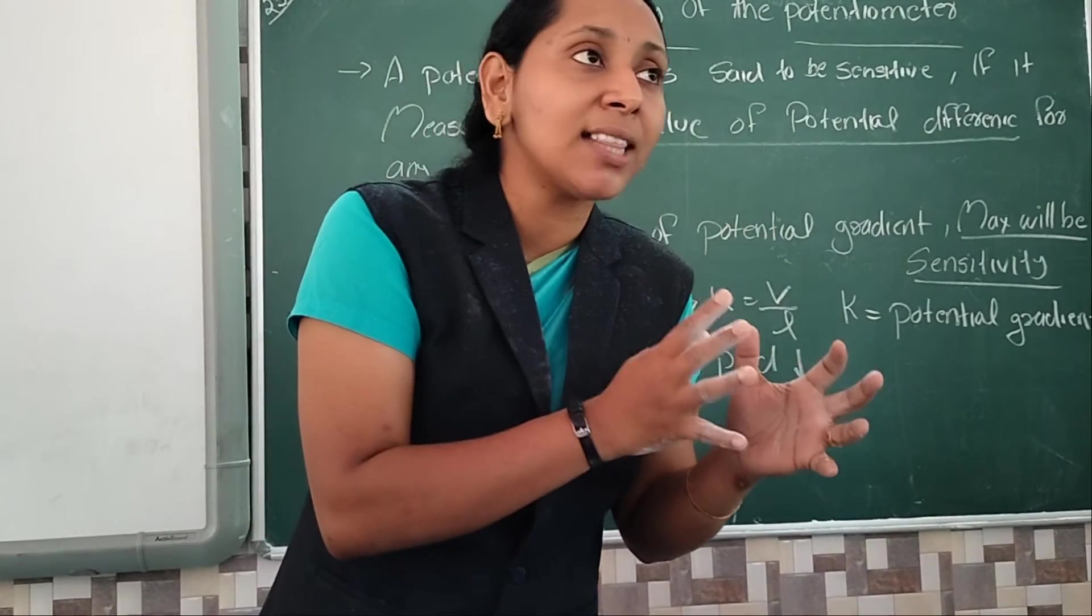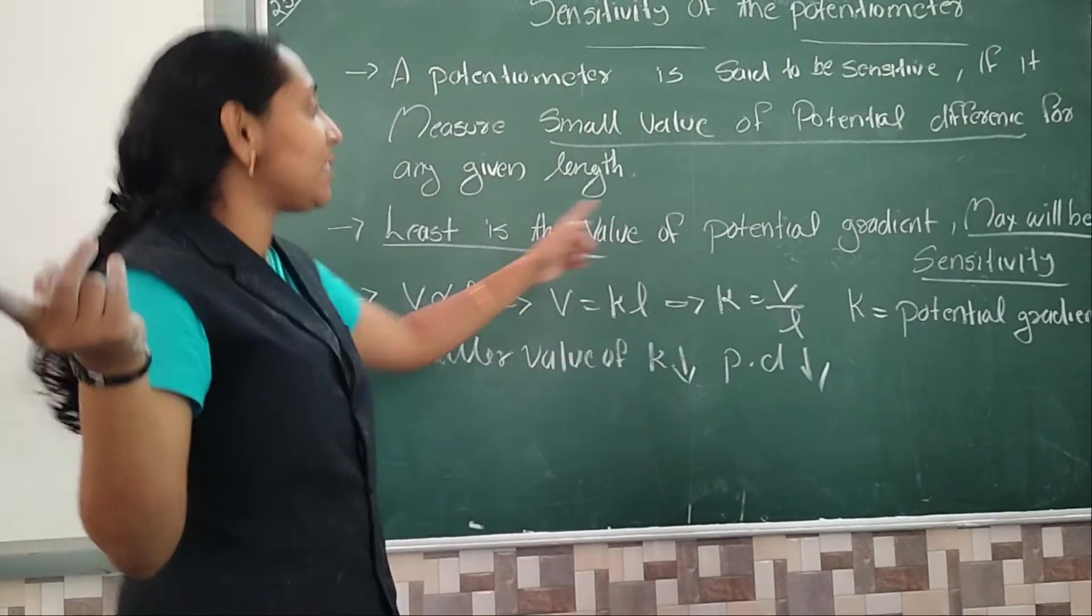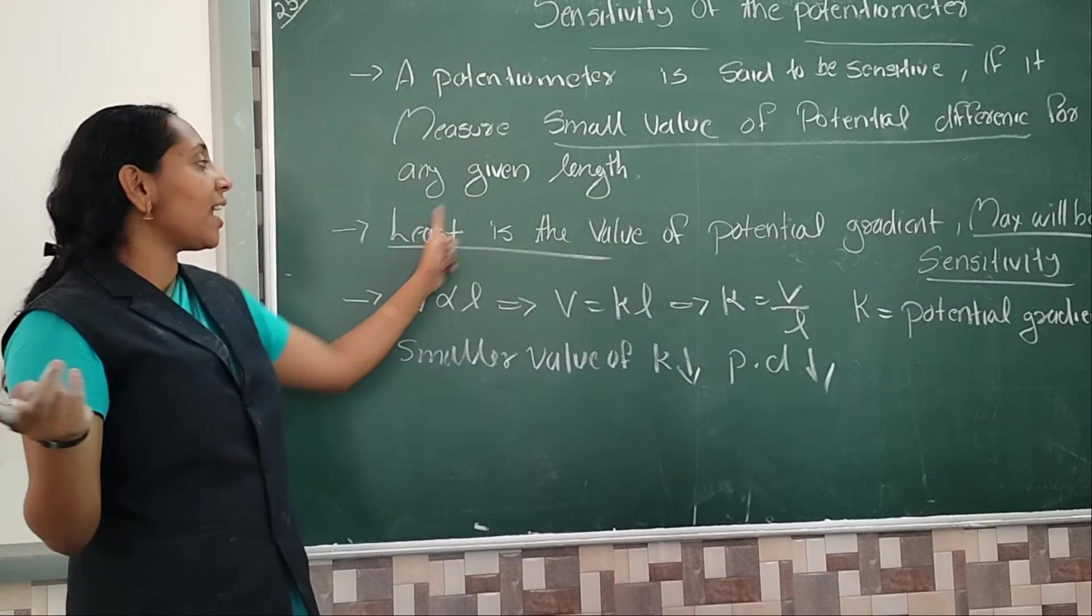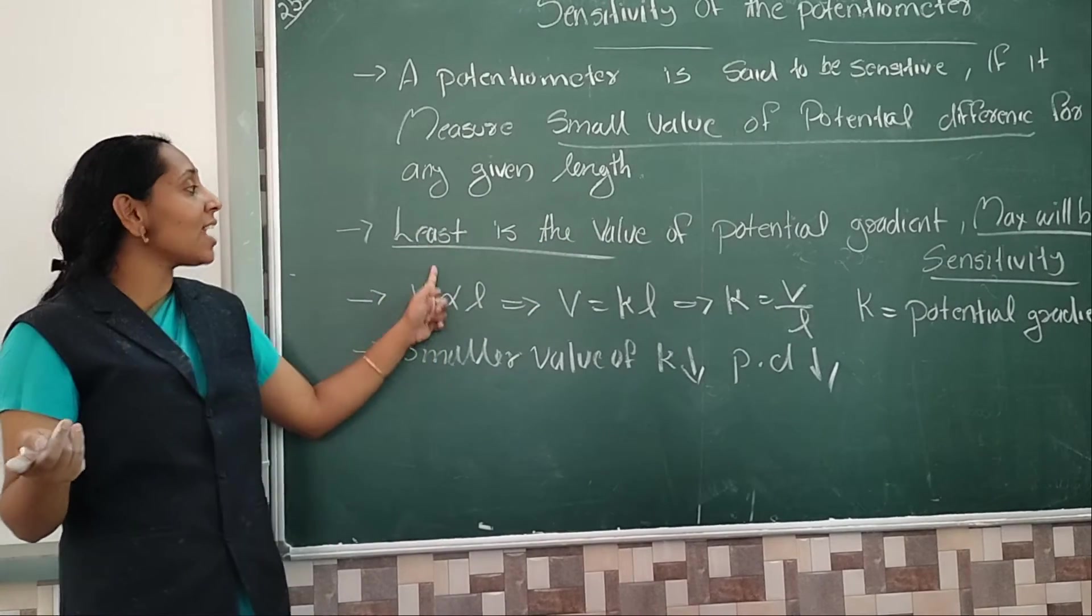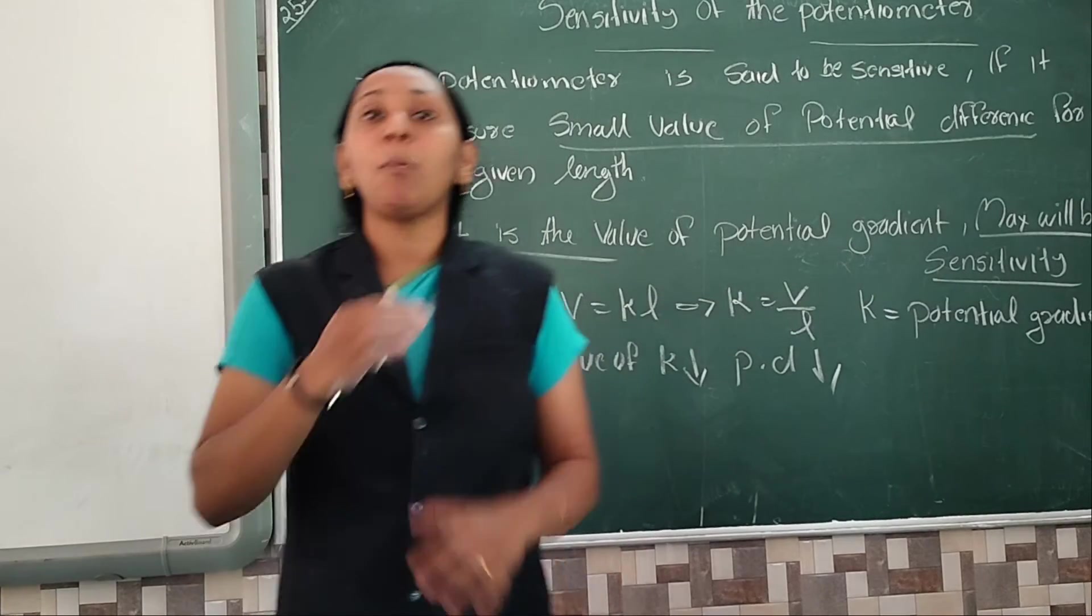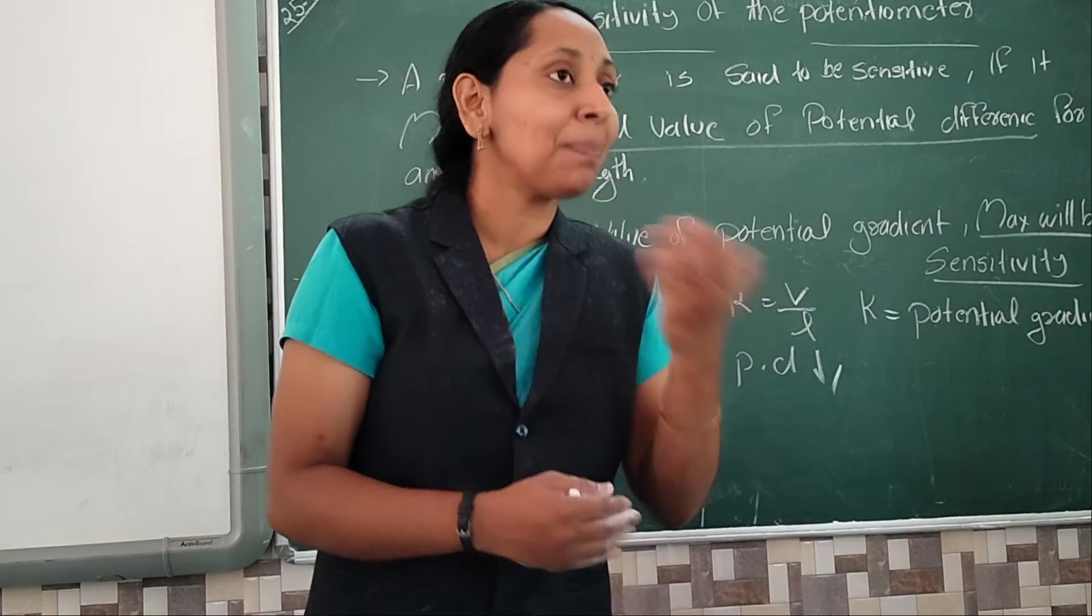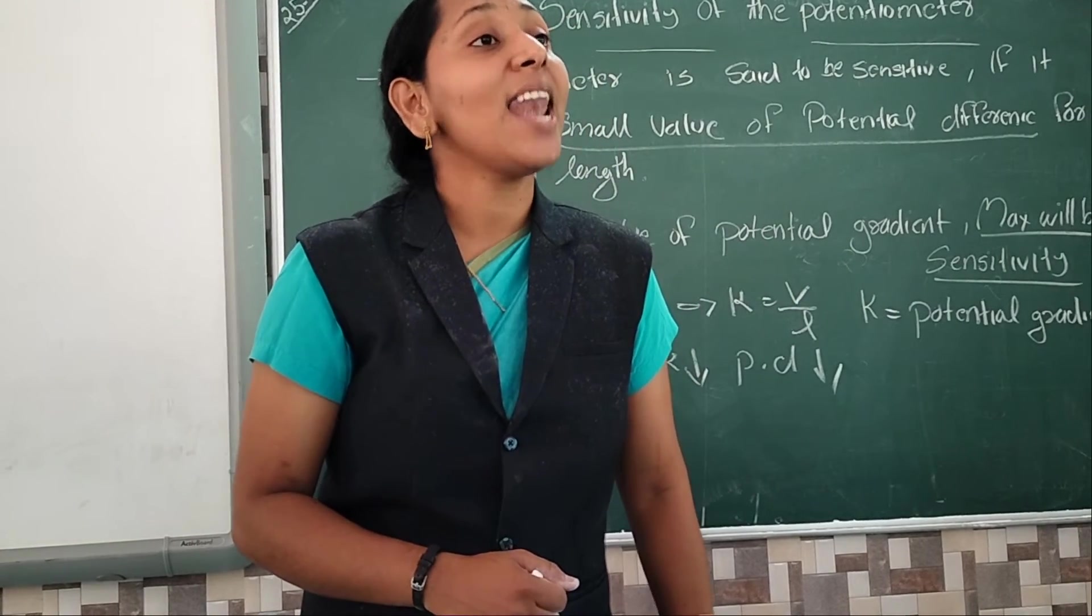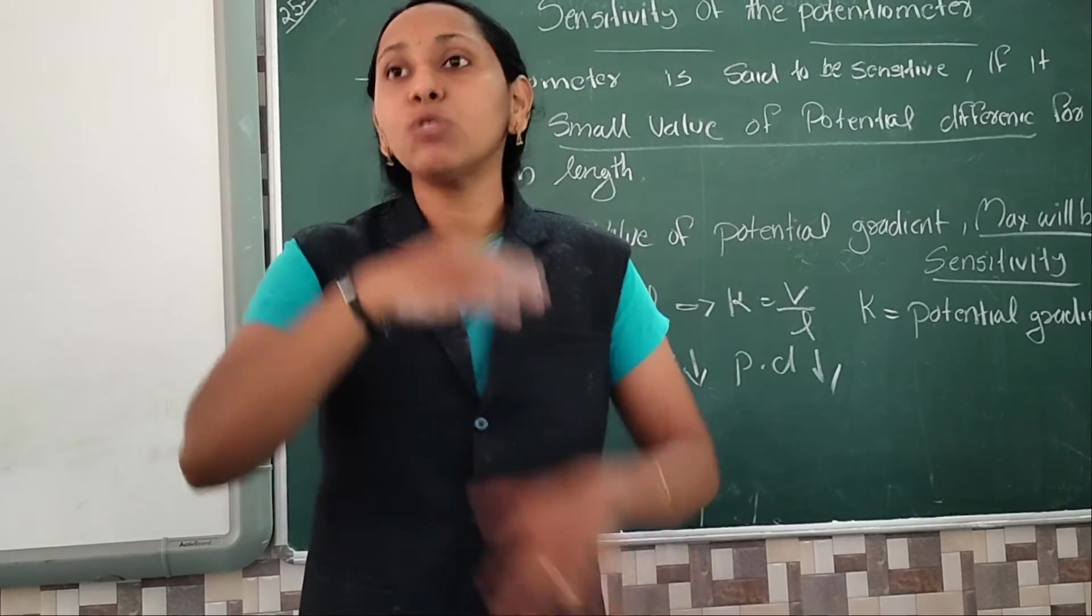Potential gradient jada hai to sensitivity less. Potential gradient is less. Least is the potential gradient, sensitivity is maximum. So potential gradient is maximum, sensitivity is less. Clear everyone. Just inverse relation hai na.